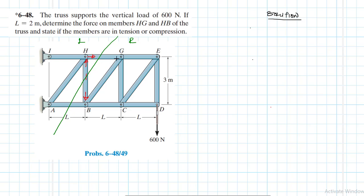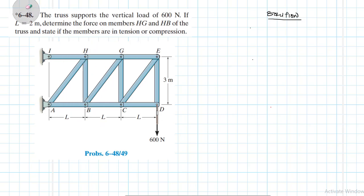Since we've already found HG, I'll use the left-hand section and take moments about point A. By this point I'll have already found all the support reactions. Let's start with the free body diagram.